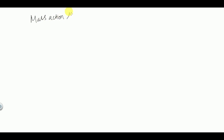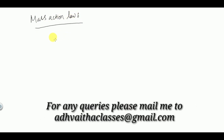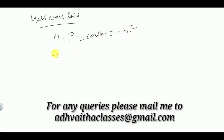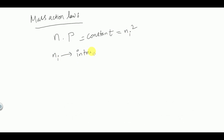Next, we will discuss mass action law. Mass action law states that the product of free electron and hole concentration in intrinsic and extrinsic semiconductors at a given temperature is constant, which is given by NI squared, where NI represents the intrinsic concentration — that is, the carrier concentration before adding any impurities. This product is equal to NI squared.